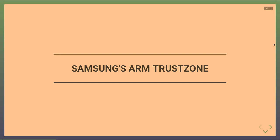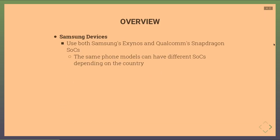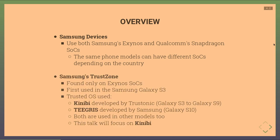Samsung devices are particular because they can use either a Samsung Exynos SoC or Qualcomm's Snapdragon, depending on country telecommunications norms and patent issues. Importantly, Samsung's TrustZone is only found on Exynos SoCs — on Snapdragon devices it is Qualcomm's TrustZone.